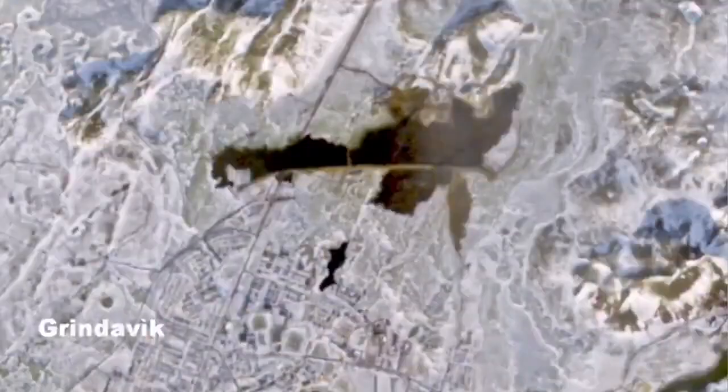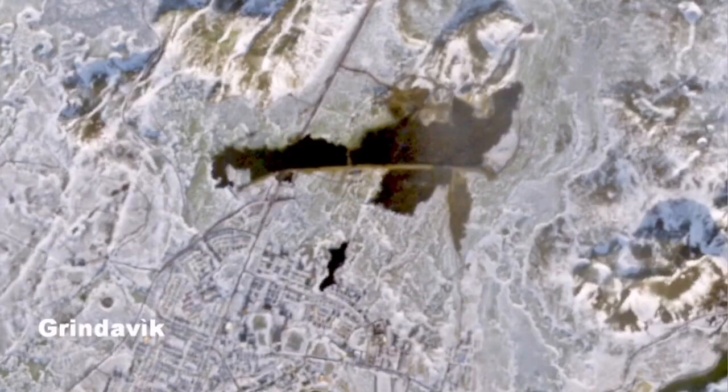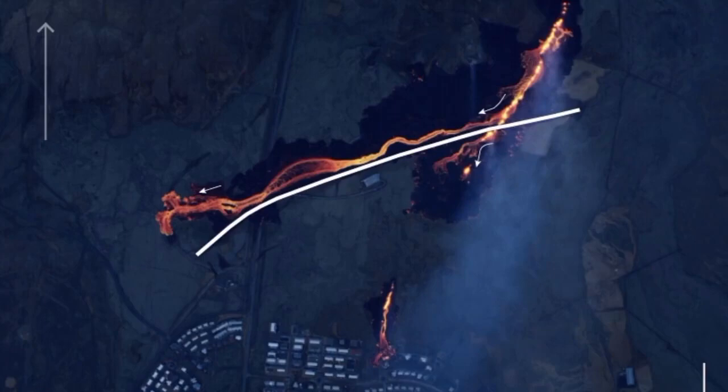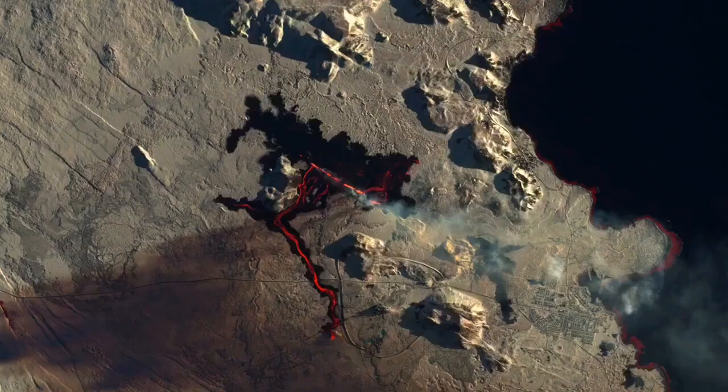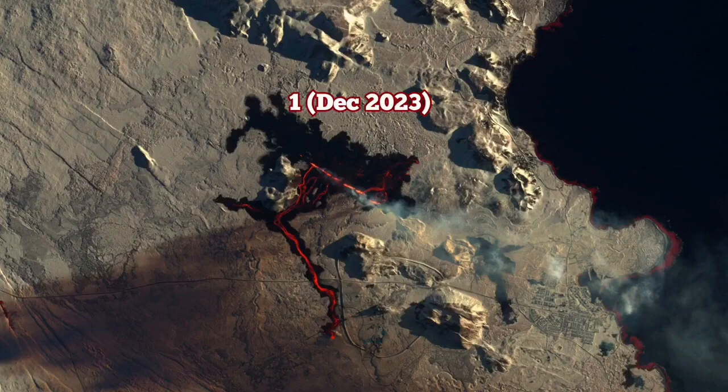Again, we saw that in the sill that was erupted in Grindavik itself. We had the first line slicing through the defense, then another part of it invading the town's north part, causing some harm and burning of a few houses.